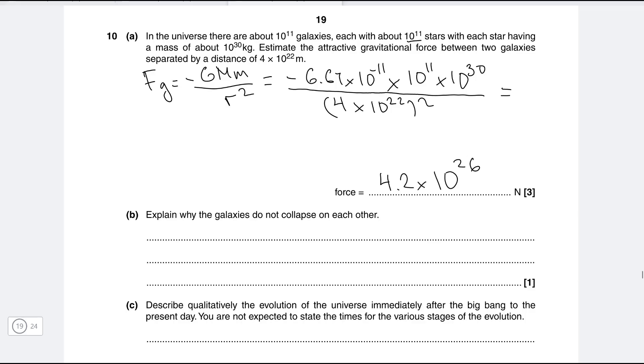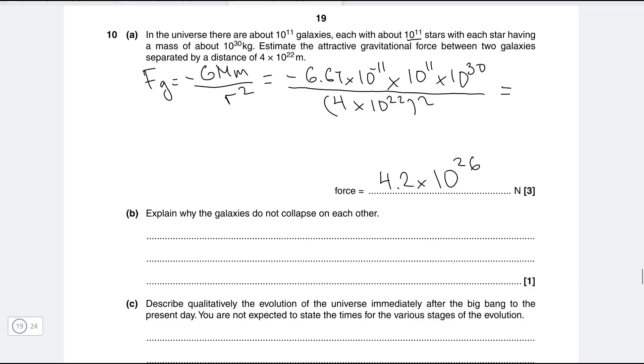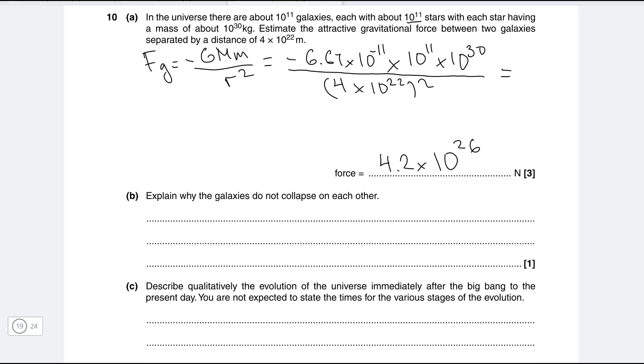Okay let's put this into a calculator and we're going to get about 4.2 multiplied by 10 to the power of 26 newtons. At least of course that's the magnitude. Typically we have the minus sign which we've just ignored for our final answer just to show that the force is attractive.